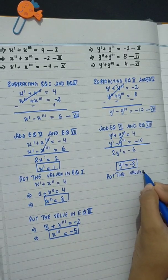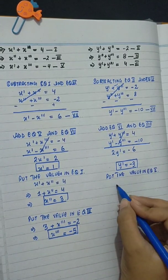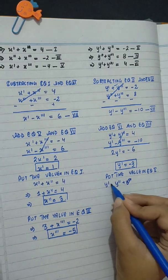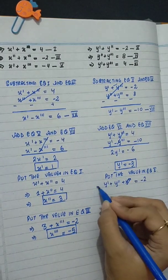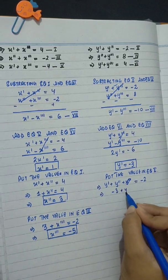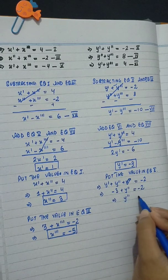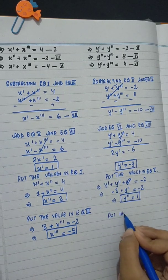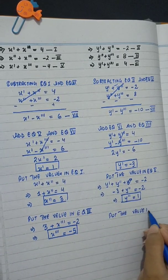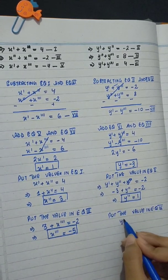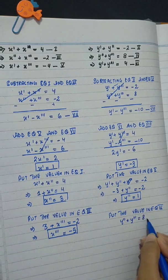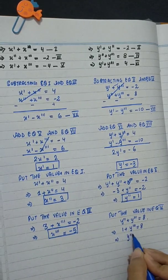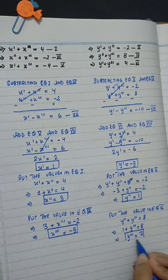Putting the value into equation 2: y' + y'' = minus 2, so minus 3 + y'' = minus 2, giving y'' = 1. Then from equation 4: y'' + y''' = 8, so 1 + y''' = 8, and y''' = 7.